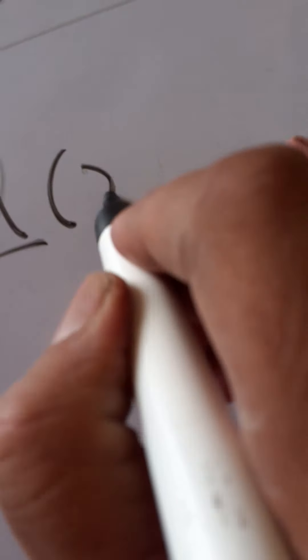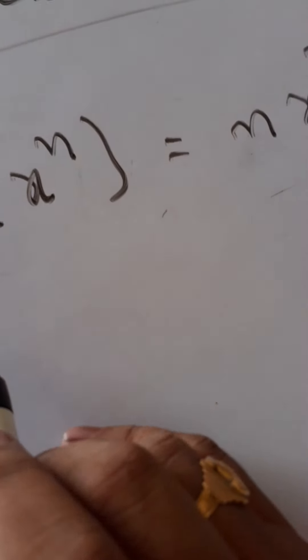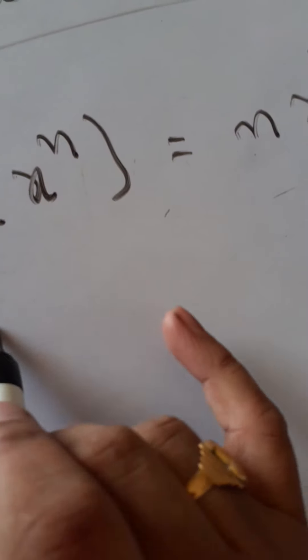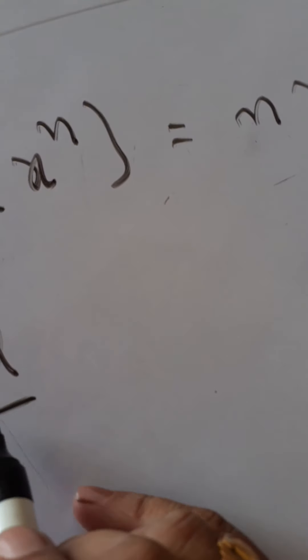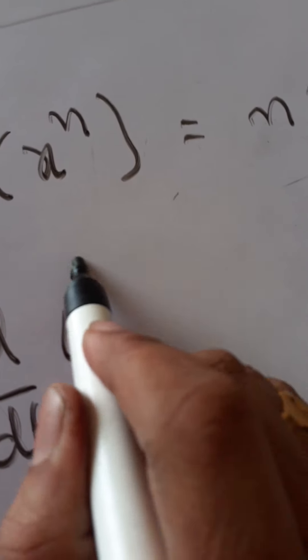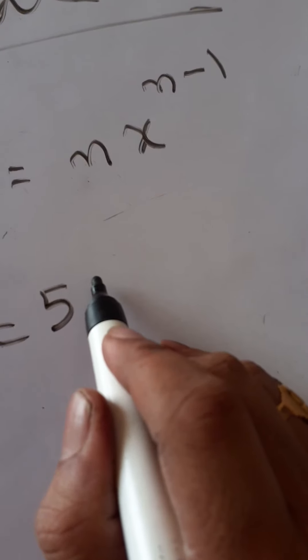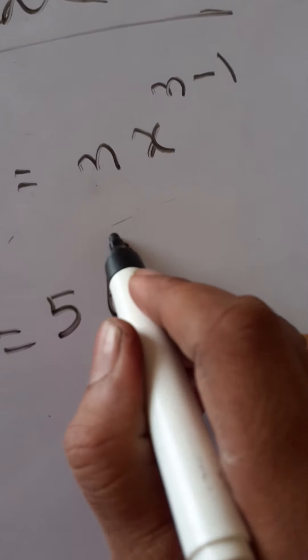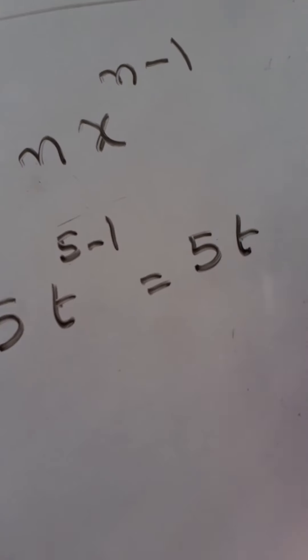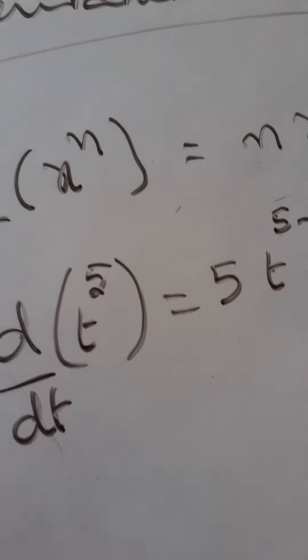We know differentiation of x power n is n into x power n minus 1. With respect to is also important. Suppose differentiation with respect to time means d by dt of t power 5 is equal to 5 into t power 5 minus 1, that is 5t power 4. So like that differentiation basic formulas we know.